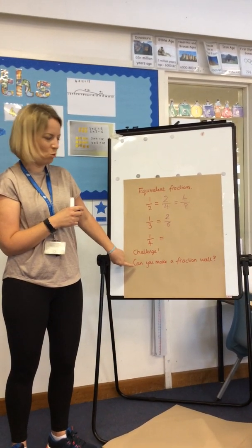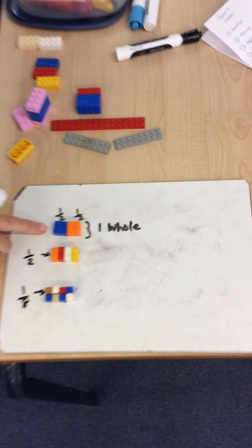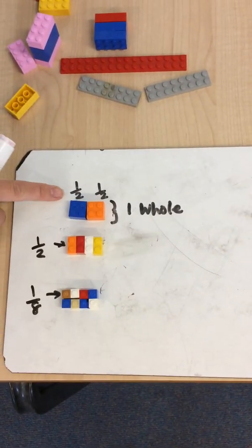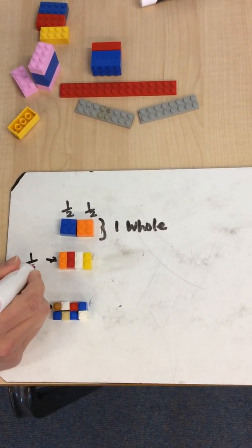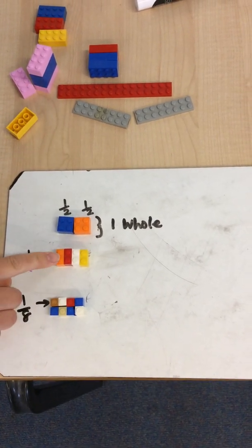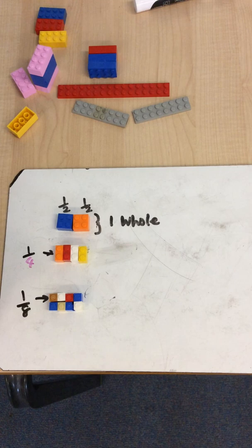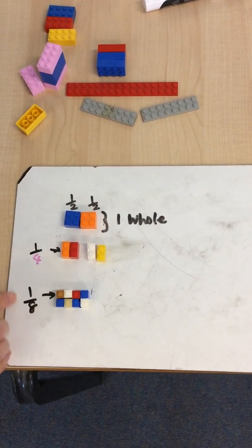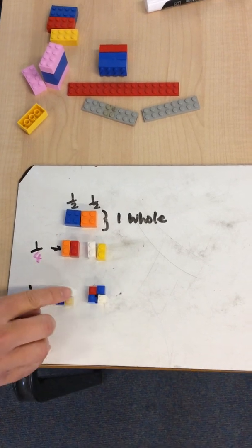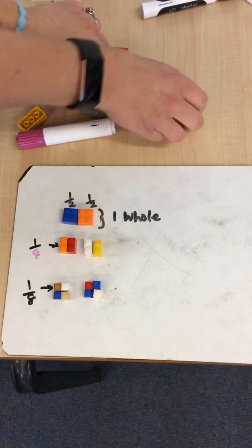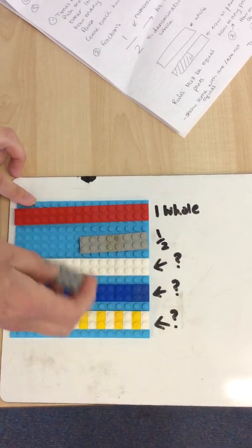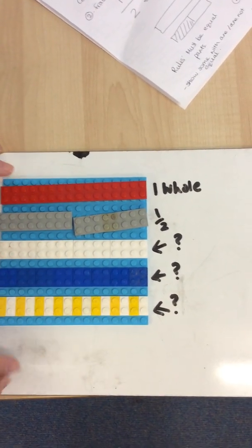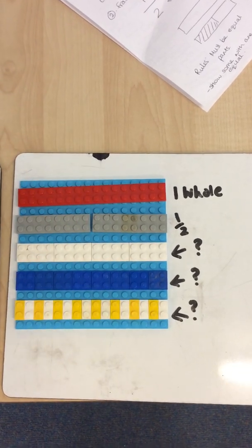I've had a go at making a fraction wall out of Lego. Here's my fraction wall — here's my whole. Half plus a half makes a whole. I've got a quarter plus a quarter plus a quarter plus a quarter, which also makes a whole. Two quarters is the same as a half. These are eighths — four eighths are also the same as a half. Here's another fraction wall — there's my whole, the big red bit; here's my halves, the grey bits. I wonder what fractions these represent. Maybe you could build this at home and try to label them.